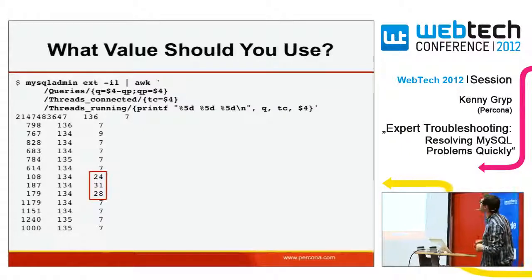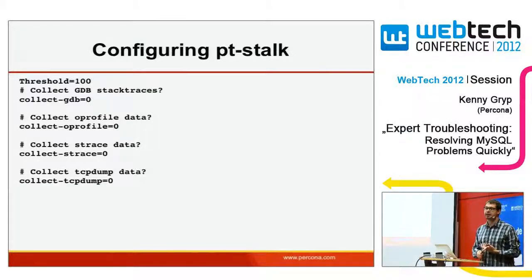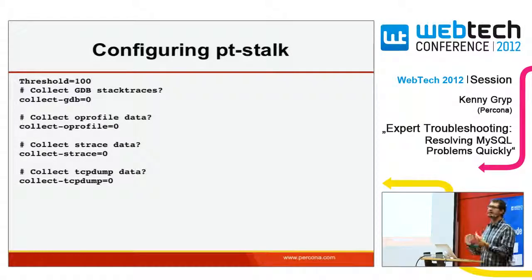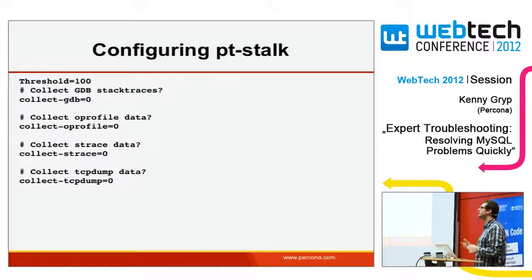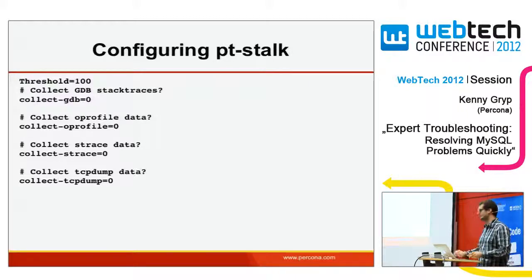PT Stalk can collect anything: GDB backtraces, pt-pmp, OProfile information, raw query data from TCP dump, and it can strace your database. By default, GDB backtrace and strace are disabled because they can stall or even crash your database — but they can be useful in some specific cases.